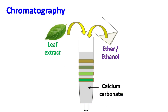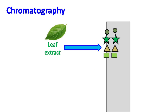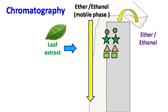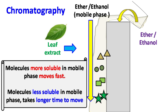Let's see how chromatography works. When the leaf extract is applied on the column, the chlorophyll pigments present in the sample are adsorbed on the stationary phase. Next, when the mobile phase is passed down the column, the chlorophyll molecules have two options: either to remain in the stationary phase or to enter the mobile phase. The molecules that are more soluble in the mobile phase enter the mobile phase and move fast down the column, while the molecules that are less soluble in the mobile phase spend more time on the stationary phase and move slowly.